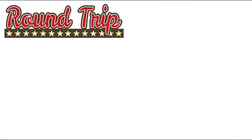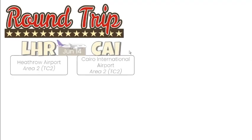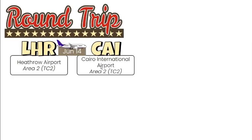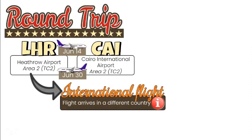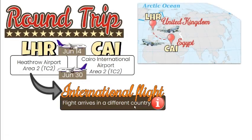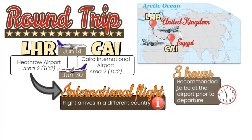Here's another example of a round trip. The flight is from Heathrow Airport going to Cairo International Airport on June 14 and returning on June 30. This is an example of an international flight, as the flight arrives in a different country. It is recommended that travelers arrive three hours prior to an international trip.